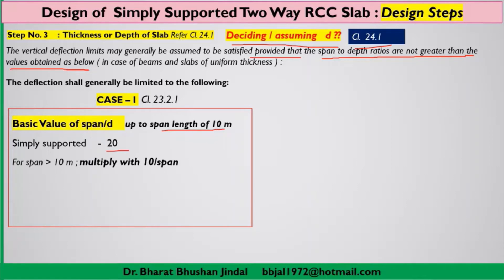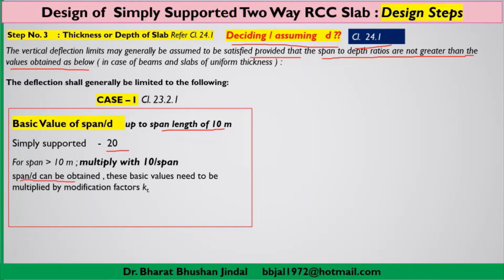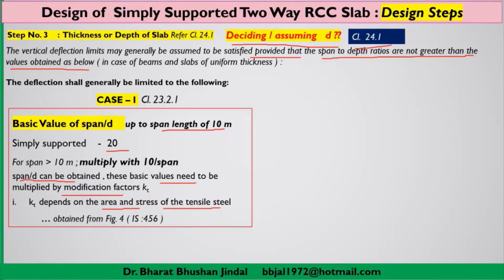If the span is greater than 10 meters, the L/D ratio is multiplied by a factor of (10 / span length). The basic value of L/D = 20 also needs to be multiplied by a modification factor KT, which depends on the area of steel and the stress in the steel. The value of KT can be taken from Figure 4 of IS456.